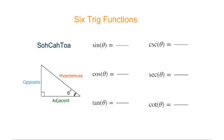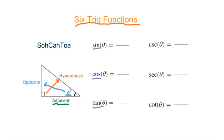This video is about six trig functions. In geometry class we already learned the three trig functions: sine, cosine, and tangent. For a right triangle, for the angle theta, we can find the opposite side and the hypotenuse side. The other leg will be the adjacent side. We have SOH-CAH-TOA to remember the definitions of sine, cosine, and tangent.